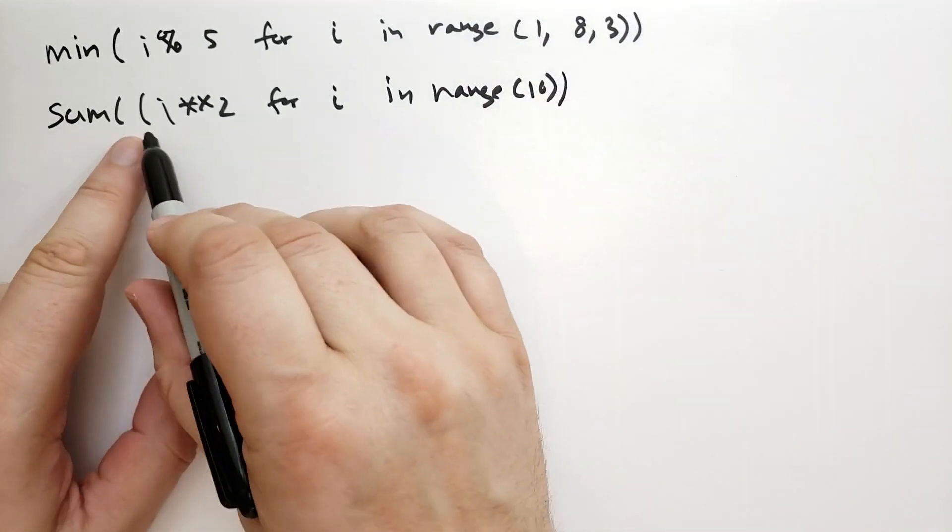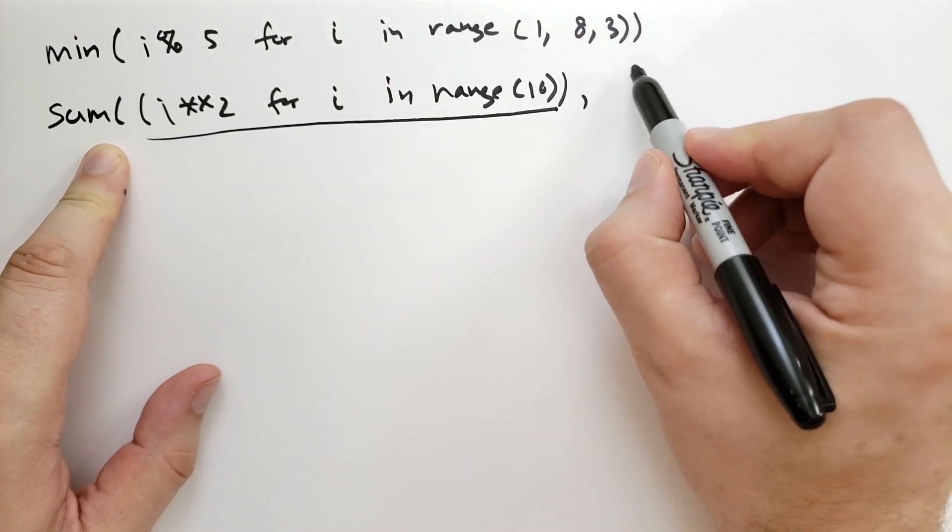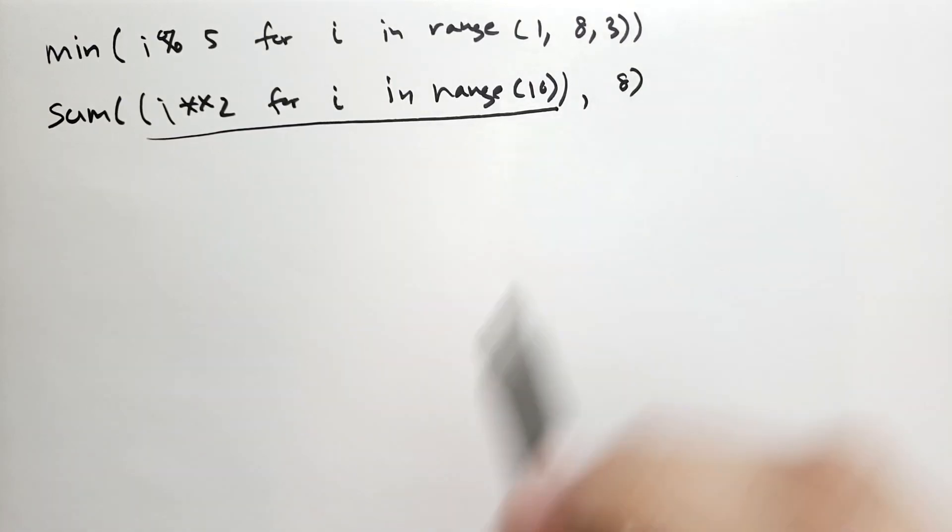And so this, between this parenthesis and this parenthesis, is a generator expression. And then I'm going to specify the starting value as 8. So that's how you would pass multiple parameters into these functions.